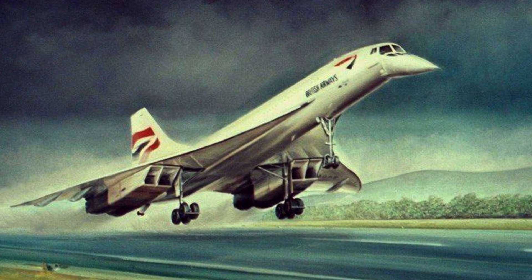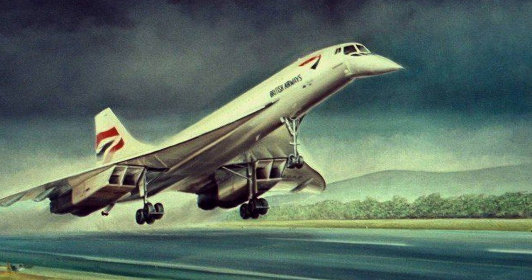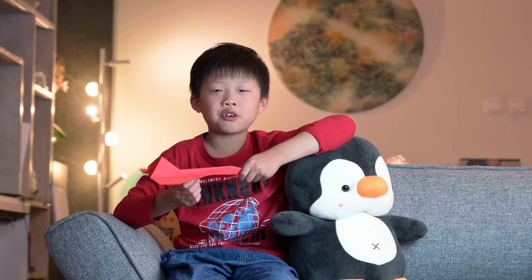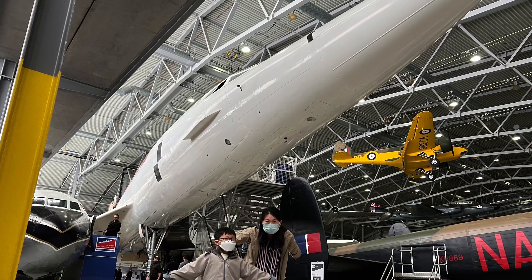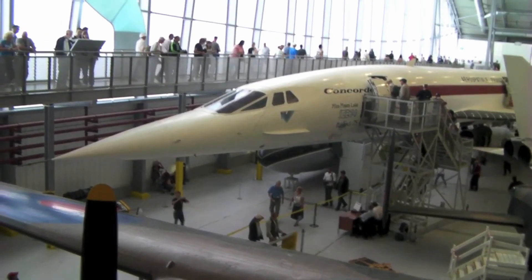The real Concorde had only 20 made. I saw one that was the third ever made, number 101, in the Imperial War Museum, Oxford. It is a supersonic plane that travels faster than the speed of sound.